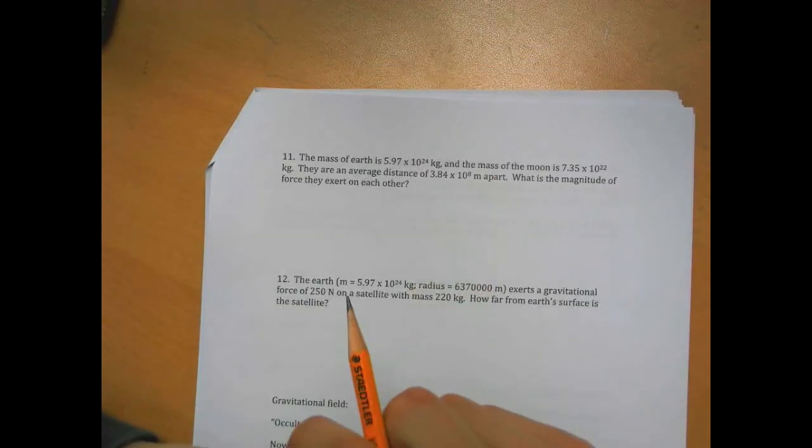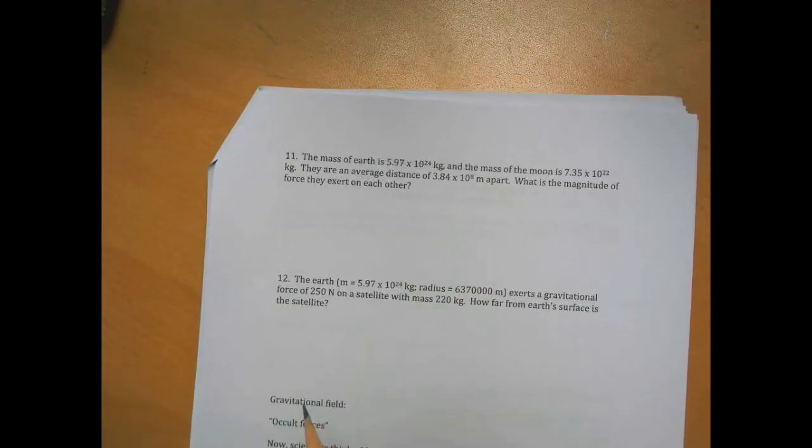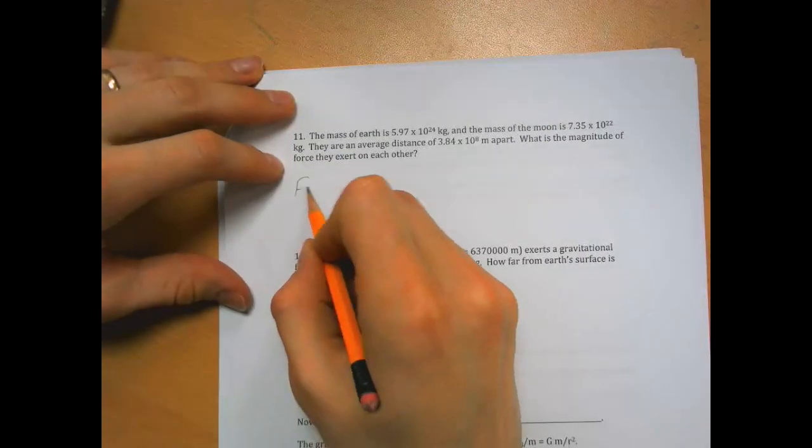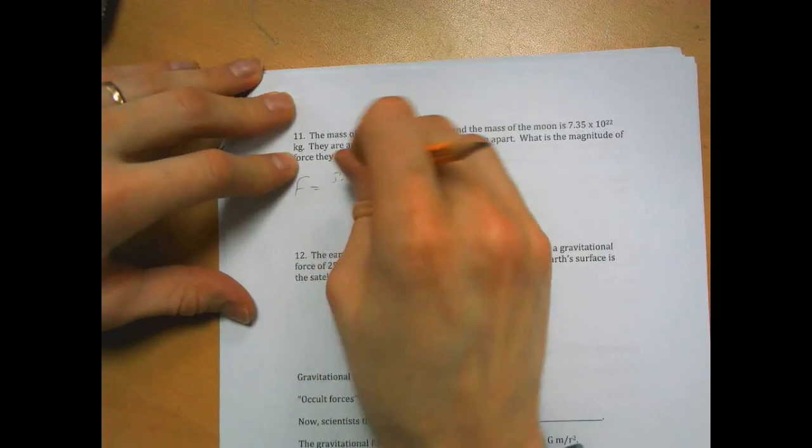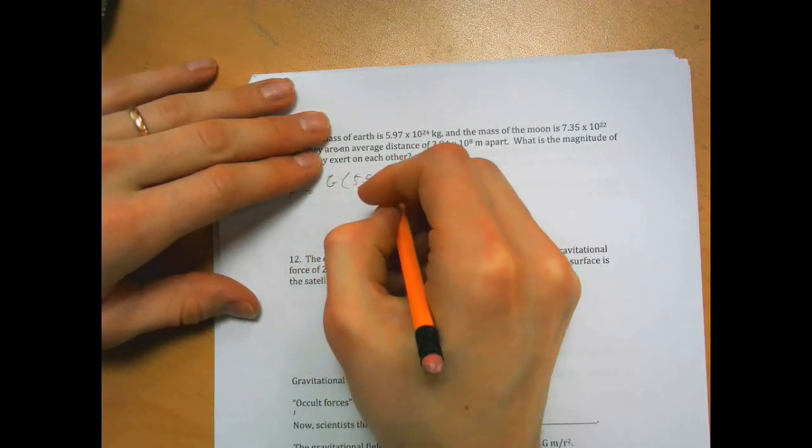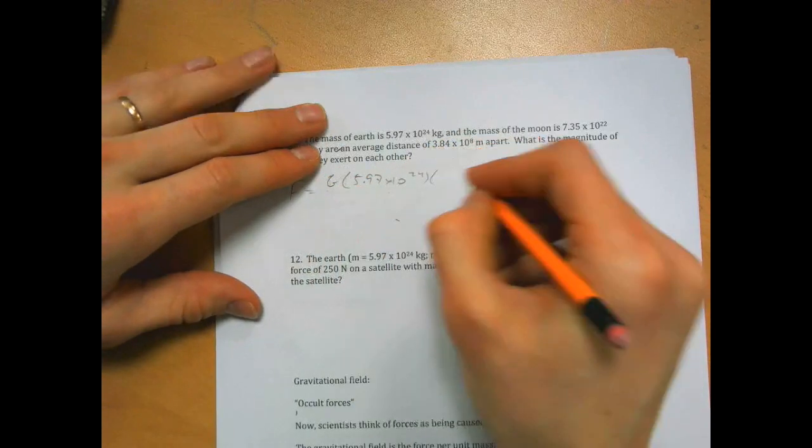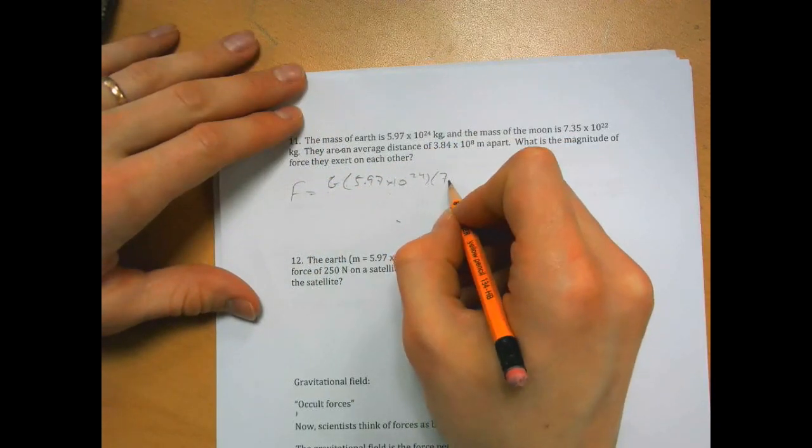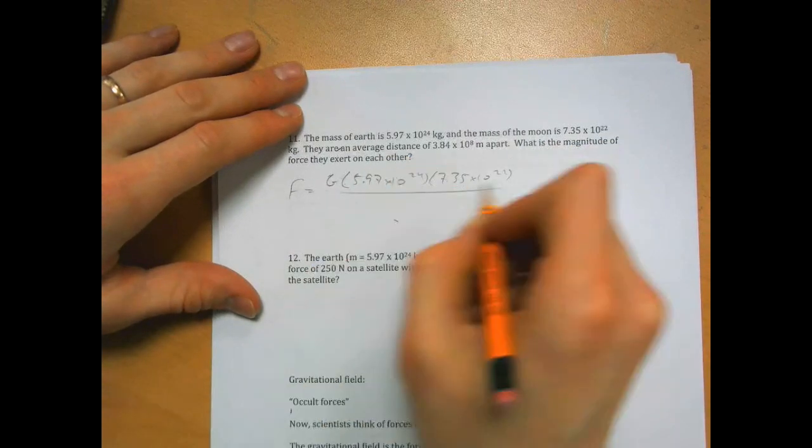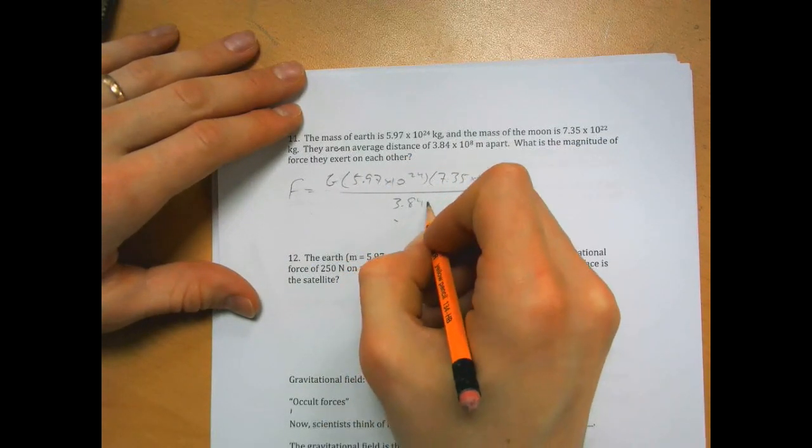Mass of Earth is that, mass of the moon is that, they're that far apart, what's the magnitude of the force they exert on each other? This is just a matter of calculating. It's going to be g times 5.97 times 10 to the 24th, times 7.35 times 10 to the 22nd, over 3.84 times 10 to the 8th.